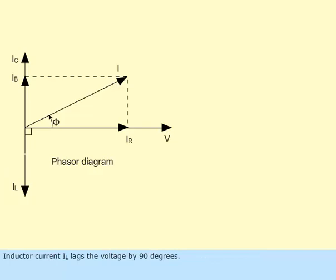Inductor current, I sub L, lags the voltage by 90 degrees. Capacitor current, I sub C, leads the voltage by 90 degrees.